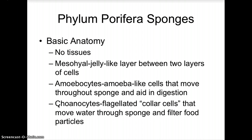The mesohyle is a jelly-like layer between the two layers of cells. The types of cells sponges are made up of are called amoebocytes — these are amoeba-like cells that move throughout the sponge and aid in digestion. Then you have the choanocytes, which are flagellated collar cells that move water through the sponge and help filter food particles. Animals are thought to have evolved from choanocyte cells.